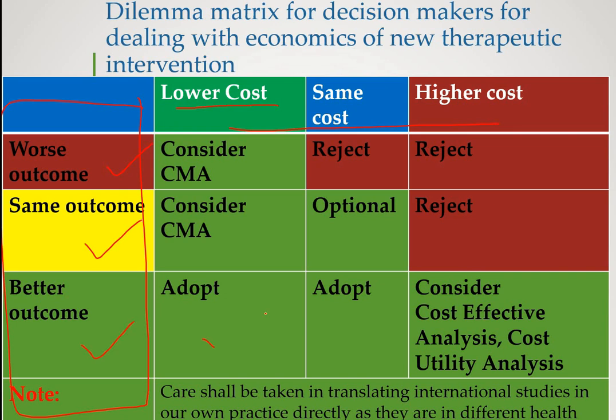In the case of a better outcome, you have to adopt that therapy modality. However, in case of lower cost, if the alternate therapy has lower cost, of course you have to adopt it, and this will be called cost-minimizing analysis. In case the cost is high, you have to reject that therapy.